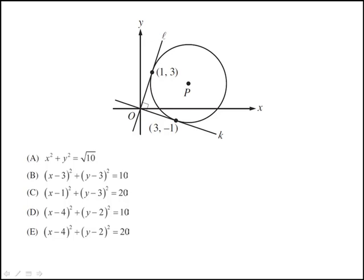In this problem, we're given a circle which has center P, and it is tangent to these two perpendicular lines. The question is, which of the following is an equation of the circle with center P?